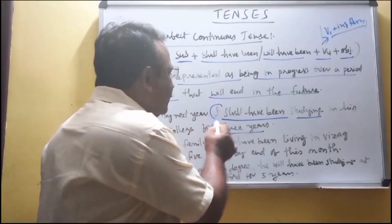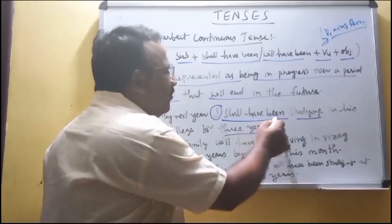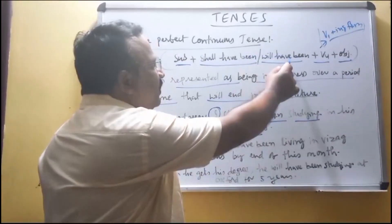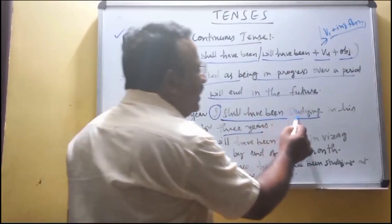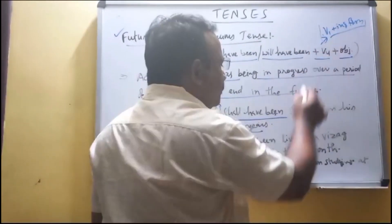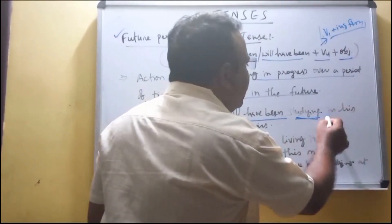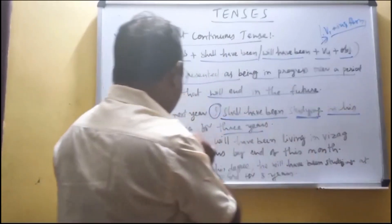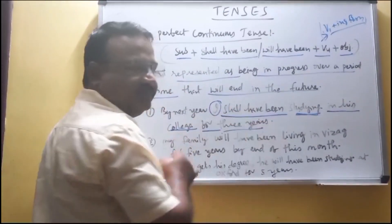Breaking down the sentence: subject is 'I', then 'shall have been' or 'will have been', then 'studying' which is V4 — V1 'study' plus 'ing' gives 'studying' — followed by 'in his college for three years'.